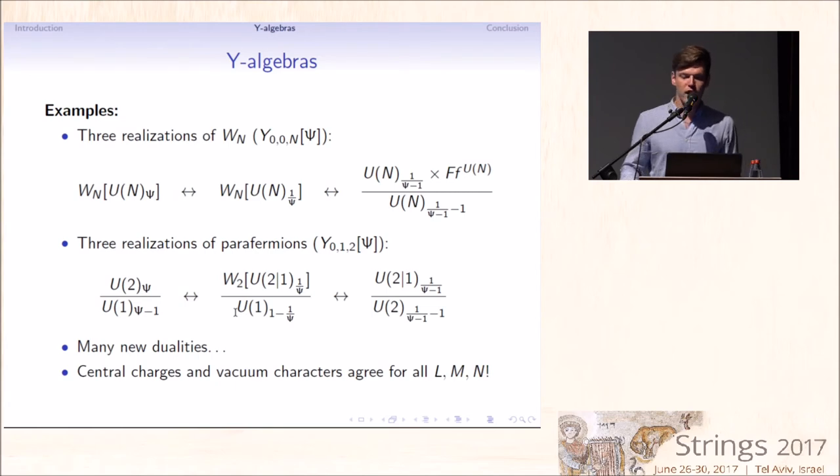Familiar examples are if we set L and M to 0, this gives rise to the triality from the introduction and thus we can explain this triality as a consequence of S-duality. Another slightly less familiar example are these three realizations of parafermions and one can specify the integral parameters to other values to recover many new dualities. We have checked that central charges and vacuum characters agree for generic L, M and N.